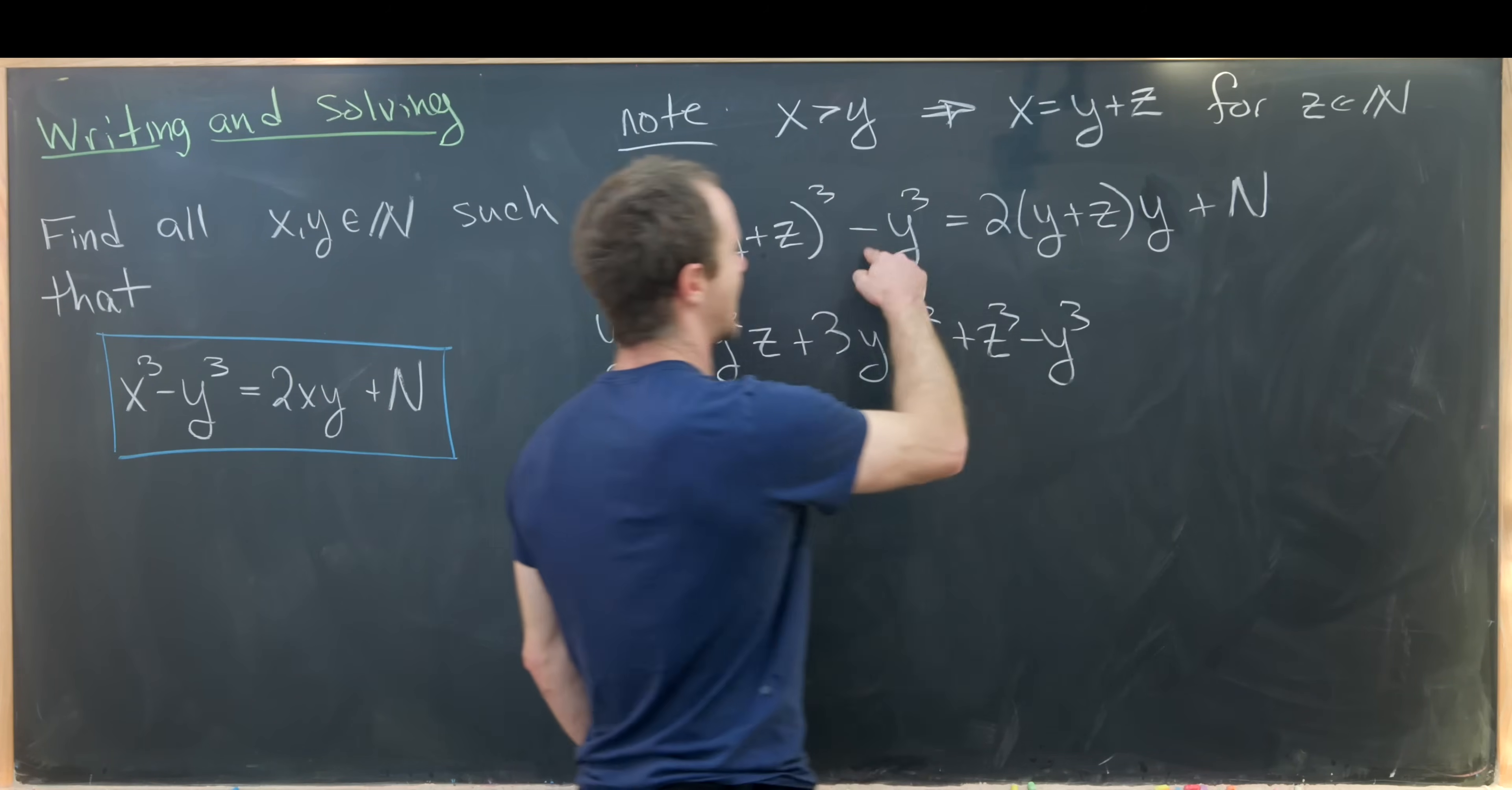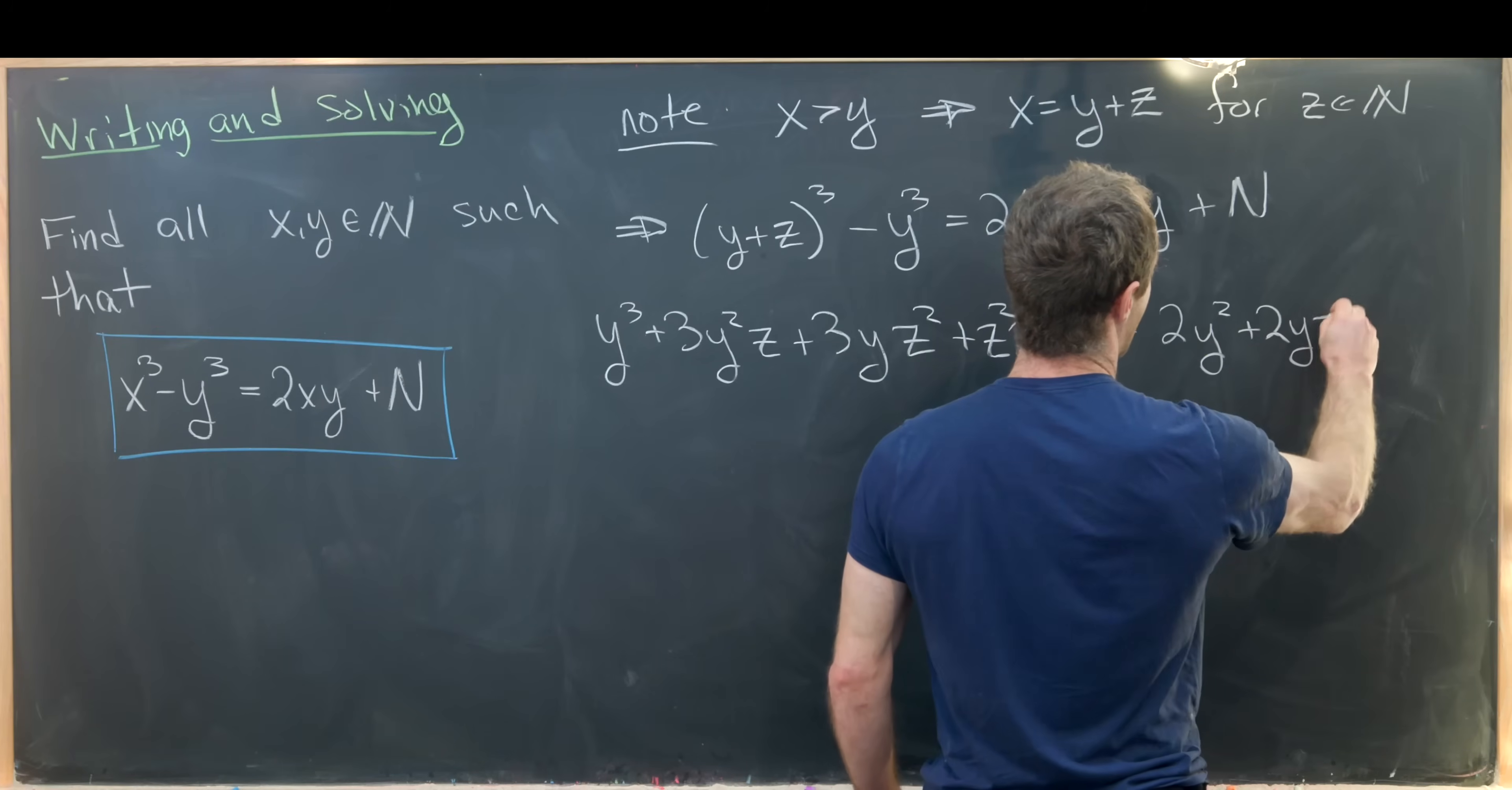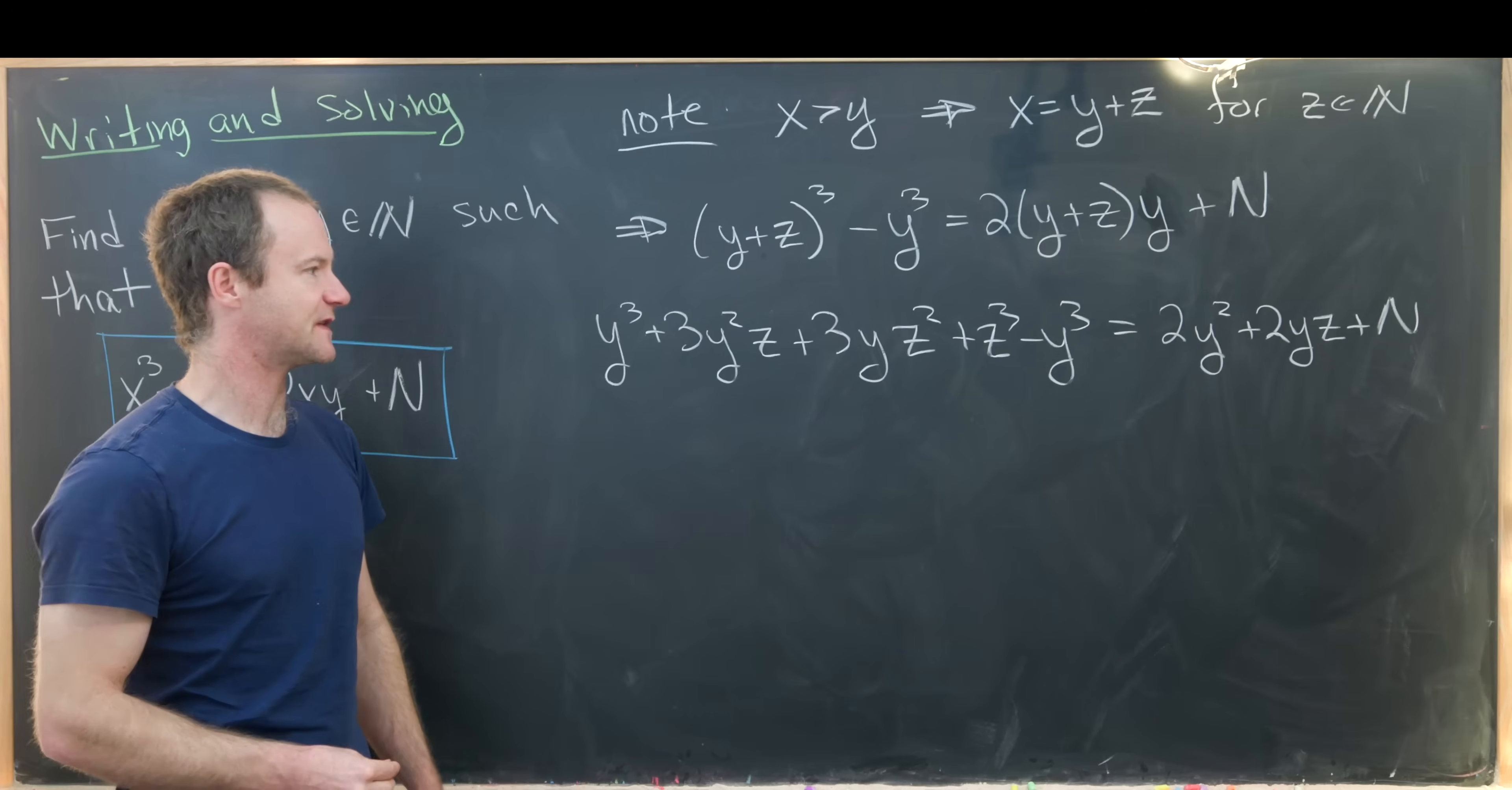Then we have this minus y³ which just comes down. Then over here on the right hand side we'll have something that looks like 2y² + 2yz plus our number N.